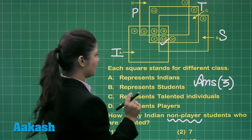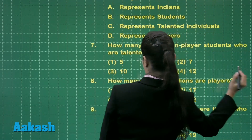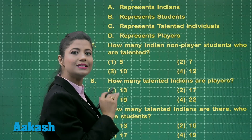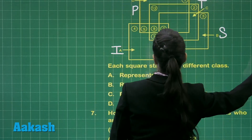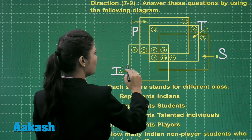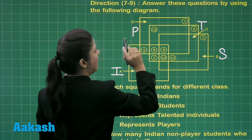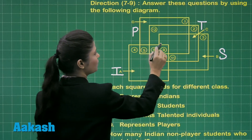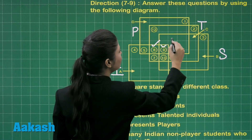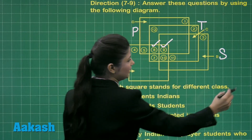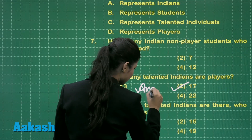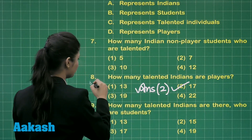Let us move on to question number 8. This question asks: how many talented Indians are players? You have to consider talented Indians and players. Firstly, the Indians include all those values; then the intersection of Indians and players includes 5, 8, and 9. Considering that they should also be talented, you take the intersection with the talented region, which includes only 8 and 9. So 8 plus 9 equals 17. Therefore, the answer for question number 8 is option number 2.